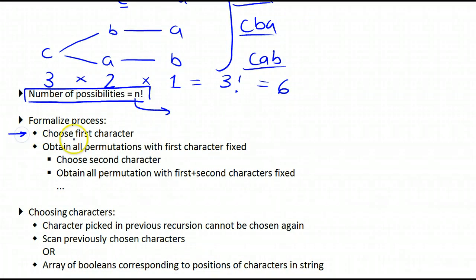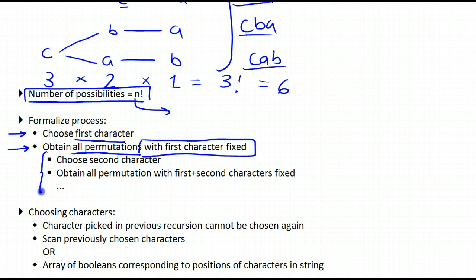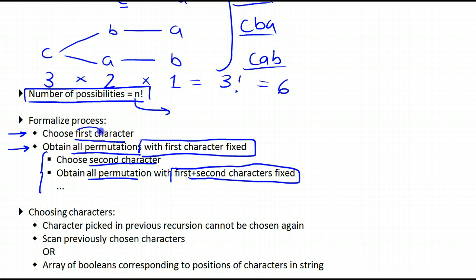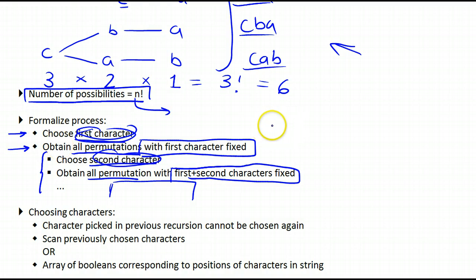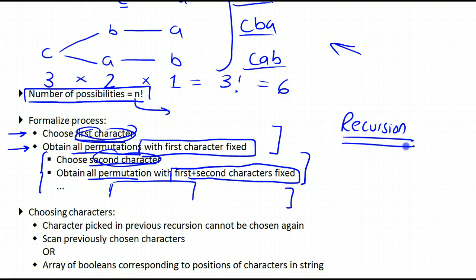So you notice how I chose my first character, and then went on to obtain all the permutations with the first character fixed. Then I chose my second character, and went on to obtain all the permutations with the first and second characters fixed — getting to the third position in the tree. And so on and so forth for every single character. When you look at these two steps that keep recurring, the first thought that comes to mind is recursion. This could be solved using a recursive algorithm, and we will implement it that way.